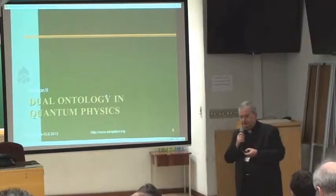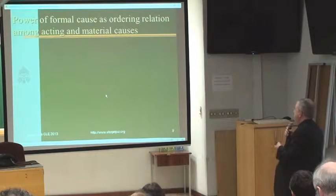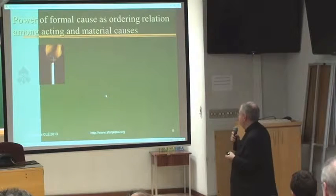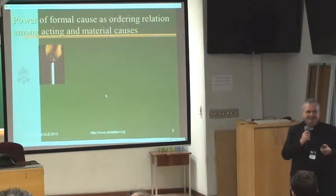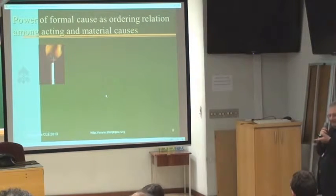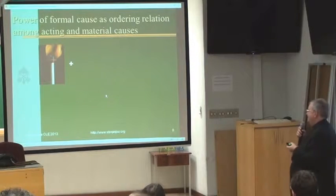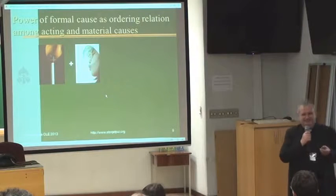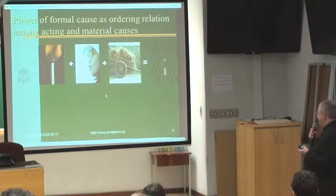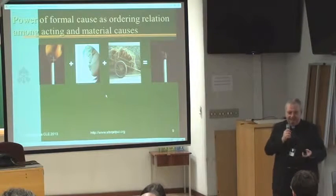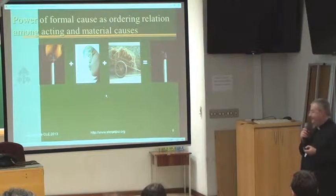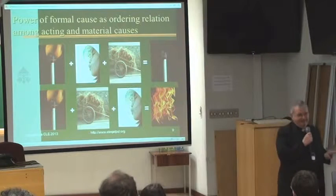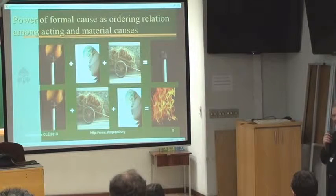Let us look for a moment at the dual ontology in quantum physics. What does dual ontology mean? The power of formal causes as an ordering relation among acting and material causes. Think of this sequence — I use this with my students. I chose a Chinese girl because I showed this the first time at Shanghai Normal University. The result of this sequential ordering is nothing. But if I change the ordering, I can make a catastrophe.